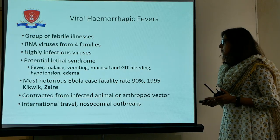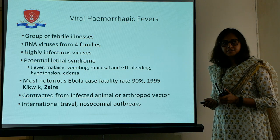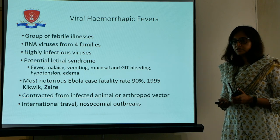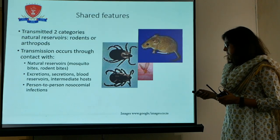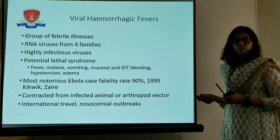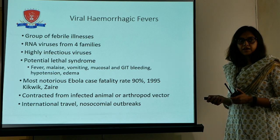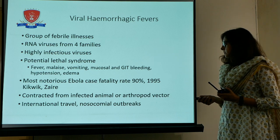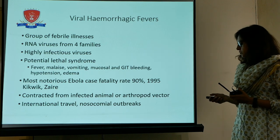Viral hemorrhagic fevers, as you all know, is a group of febrile illnesses and RNA viruses are from four families. These are highly infectious viruses and they can cause relatively asymptomatic disease to almost potentially lethal syndromes. That lethal syndrome would consist of fever, myalgia, vomiting, mucosal and GI bleeding, hypotension, and edema. The most notorious was the Ebola virus, which was detected recently and created havoc but is now controlled. Usually these viral illnesses are contracted from infected animals or arthropod vectors and are transmitted through international travel and nosocomial outbreaks.